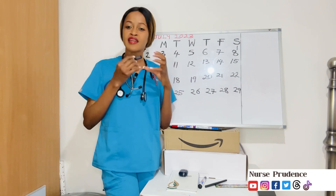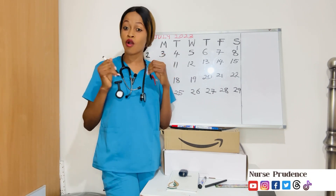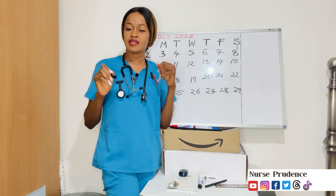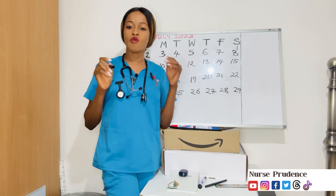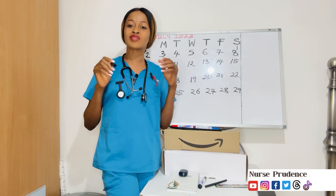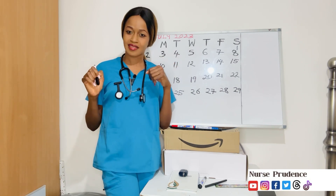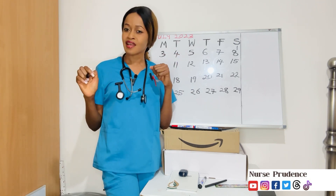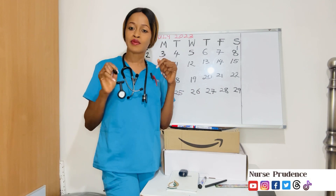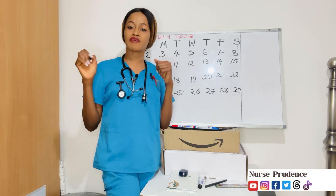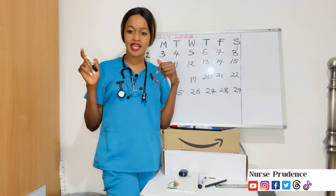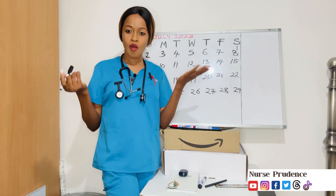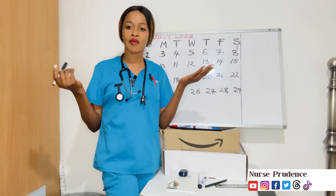Ovulation is the release of an egg from the ovary. Fertile window is the number of days in a woman's menstrual cycle that she is most likely — most likely — to get pregnant. And menstrual cycle is the time from the first day of your menstrual flow to a day before the next menses. Now, how do we calculate ovulation and your fertile window?